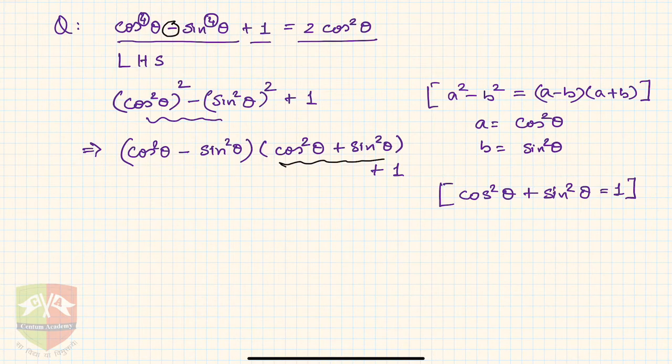So if you notice, this particular factor will be reduced to 1. So hence what do I get? I get cos²θ - sin²θ multiplied by 1, and then plus 1.